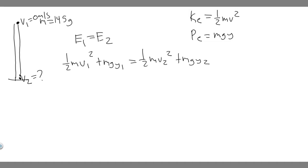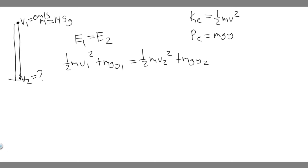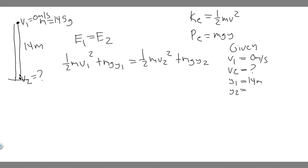We're taking the energy at the beginning and setting it equal to the energy at the end — this one doesn't have air resistance. We need to determine each variable. V1 is 0 meters per second because it starts from rest. V2 is what we're solving for. Y1 is the height in the beginning, which is 14 meters. Y2 is the height at the end — since it's hitting the ground, that's 0 meters.